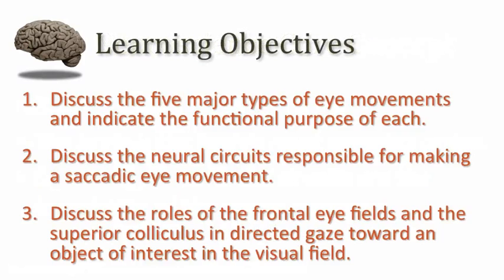That gets us into our learning objectives for this session. What I want you to be able to do is to discuss the five major types of eye movements and indicate the function and purpose of each. I want you to be able to discuss the neural circuits that are responsible for making saccadic eye movements, and to discuss the roles of the relevant parts of the brain involved in governing these eye movements.